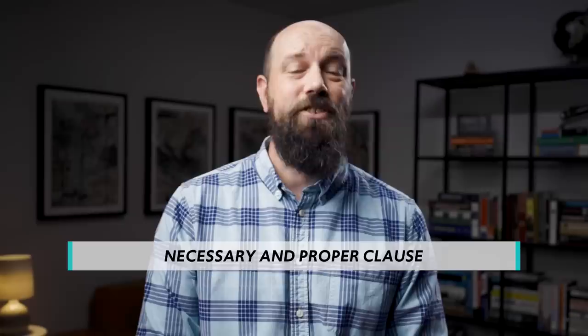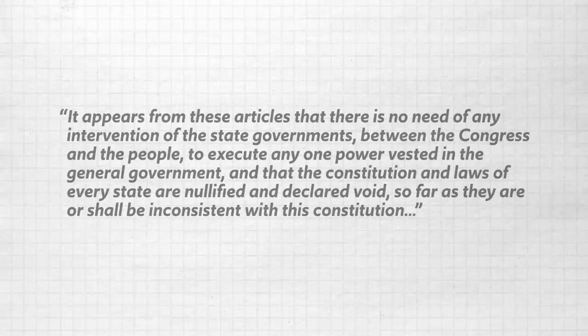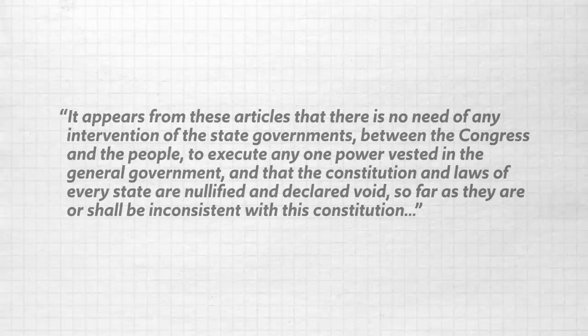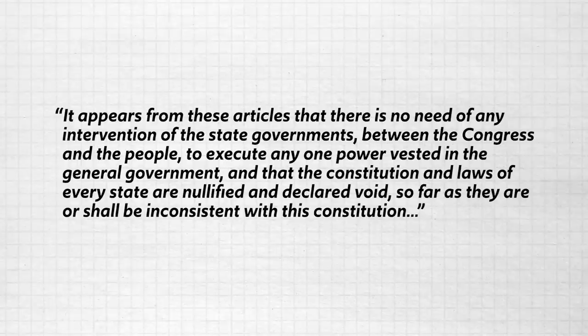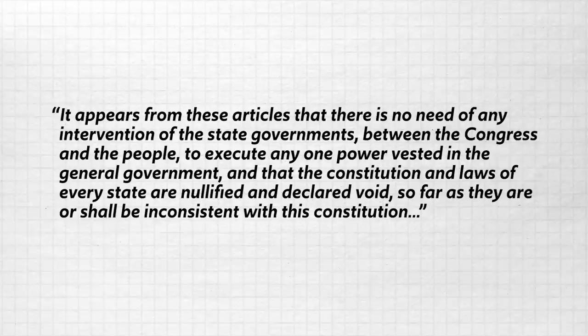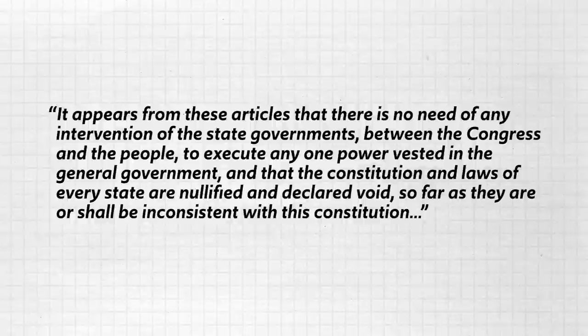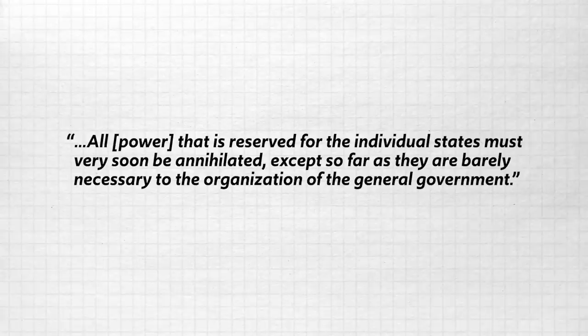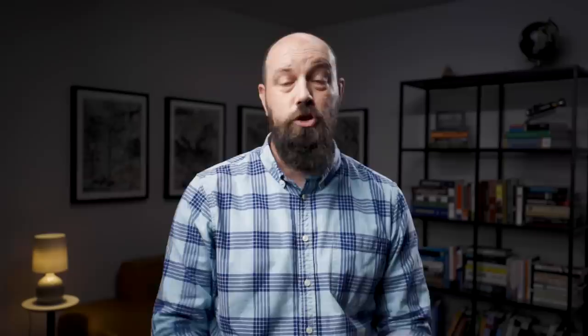There are several arguments Brutus makes in support of this claim. Chief among them is the Necessary and Proper Clause in Article 1, Section 8 of the Constitution, which says that Congress can make any law which shall be necessary and proper to the execution of its enumerated powers. Also causing concern is the Supremacy Clause in Article 6, which says that federal laws have greater authority than state laws. Brutus writes: 'It appears from these articles that there is no need of any intervention of the state governments between the Congress and the people to execute any one power vested in the general government, and that the Constitution and laws of every state are nullified and declared void so far as they shall be inconsistent with this Constitution.' Therefore, all power reserved for the individual states must very soon be annihilated. Brutus's main concern is that by creating a central authority that can pass any law via the Necessary and Proper Clause, and crush any state law via the Supremacy Clause, state governments will just shrivel up and die.